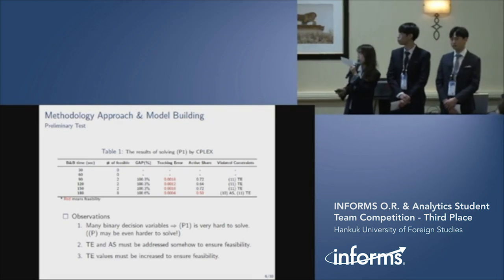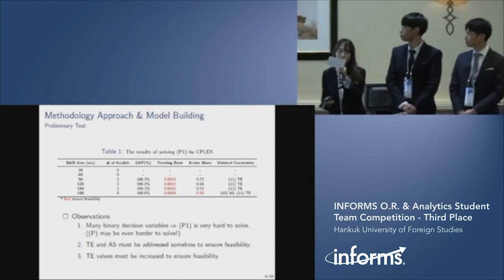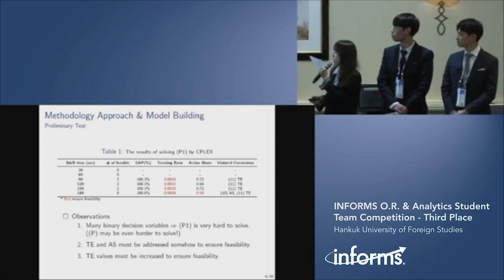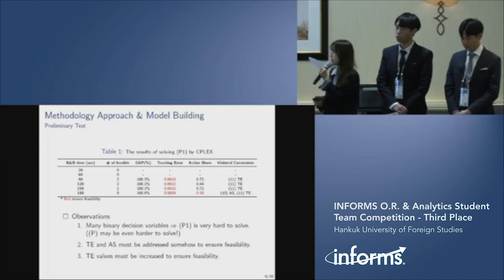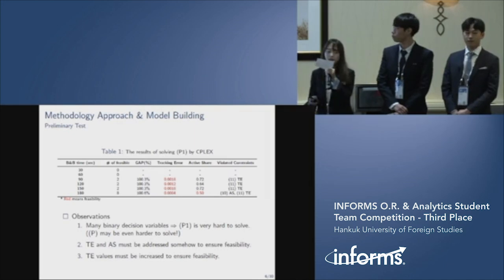We derived the following three observations. First, since there are too many binary decision variables, P1 and P are really hard to solve as they are. Second, tracking error and active share must be addressed somehow to ensure feasibility. And third, tracking error values must be increased to satisfy the target range.